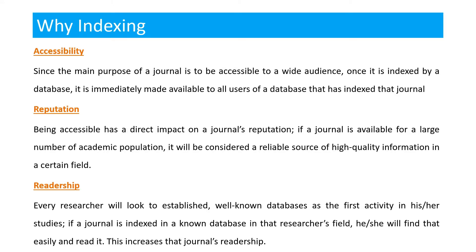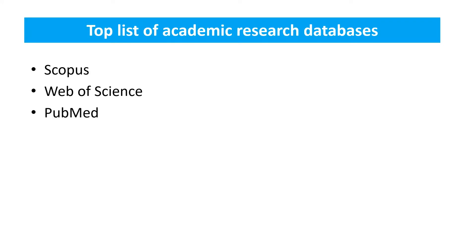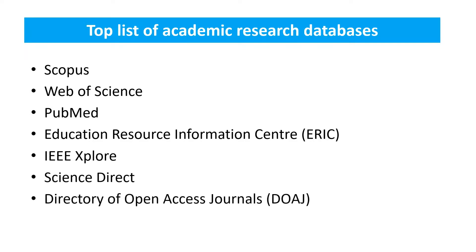Now I'm going to show you the top list of academic research databases. Number one is Scopus, number two is Web of Science, then PubMed, then ERIC (Education Resource Information Center), IEEE Xplore, Science Direct, DOAJ (Directory of Open Access Journals), and JSTOR. These are basically the top academic research databases. In this video tutorial we will discuss Scopus and Web of Science.